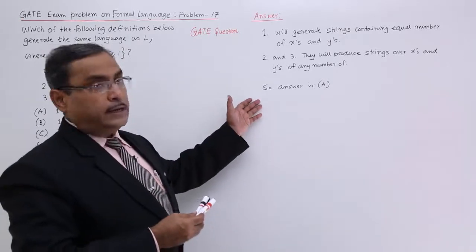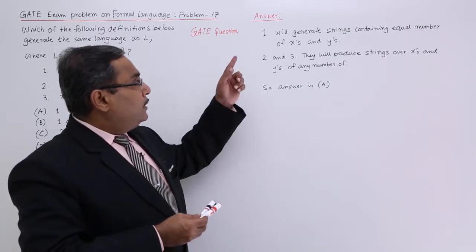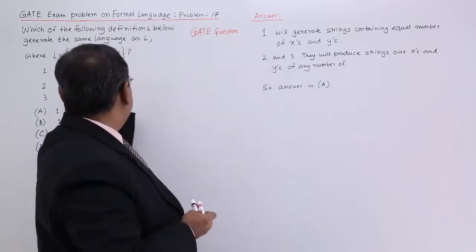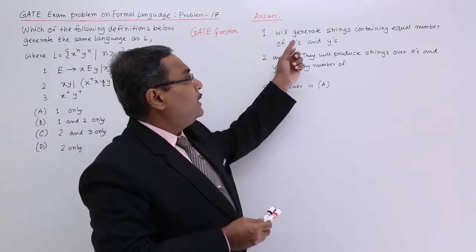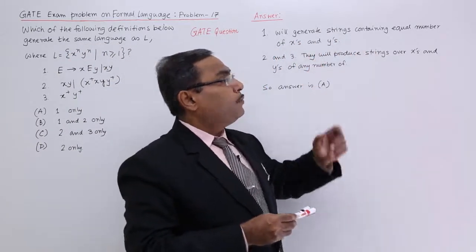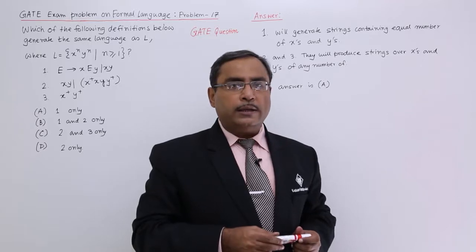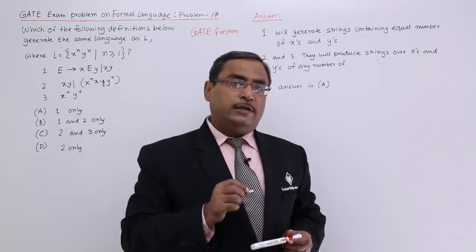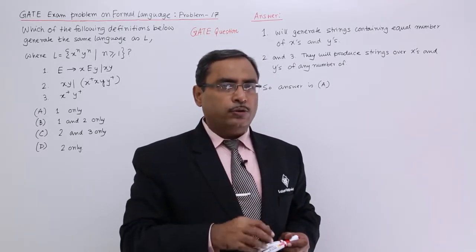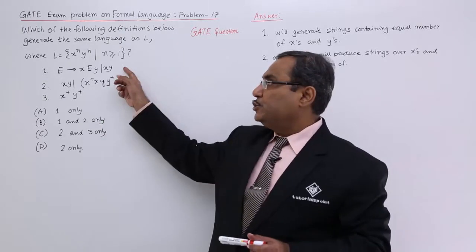We have done the same here in this particular answer, number 1. So 1 will generate strings containing equal number of x and equal number of y, and obviously also at least one x and at least one y will be there, and that has been ensured.